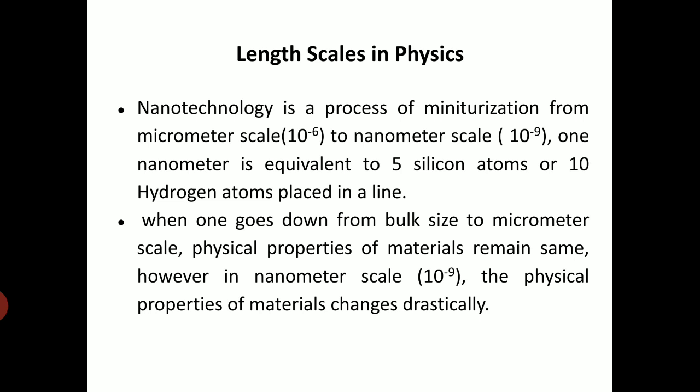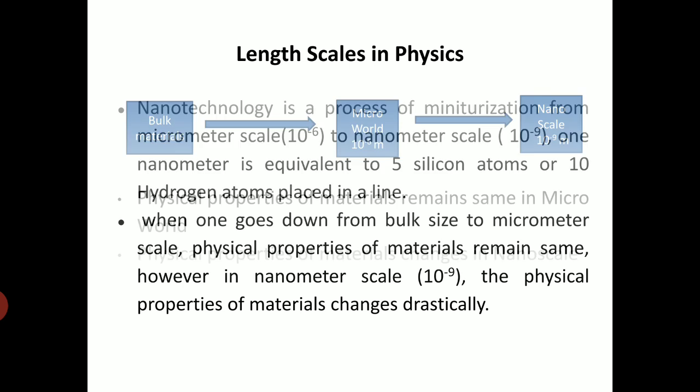Length Scale in Physics. Nanotechnology is a process of miniaturization from micrometer scale to nanometer scale. One nanometer is equivalent to 5 silicon atoms or 10 hydrogen atoms placed in a line. When one goes down from bulk size to micrometer scale, physical properties of the materials remain same. However, in nanometer scale the physical properties of the material change very drastically.